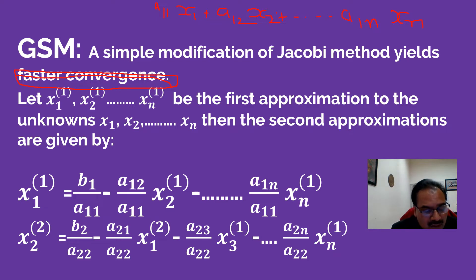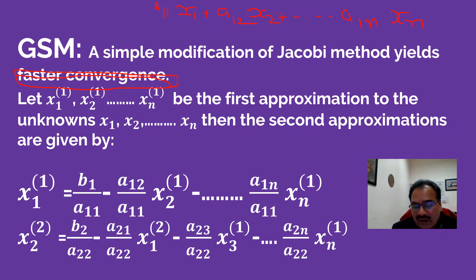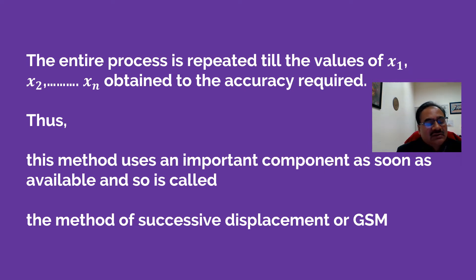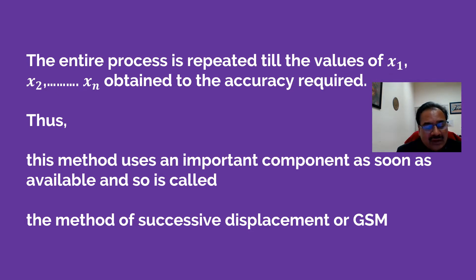Similarly, you will get x2⁽²⁾ = b2/a22 − (a21/a22)·x1⁽²⁾ − (a23/a22)·... and x3⁽²⁾ and xn⁽²⁾ also in this form. The key point is that values are updated immediately as soon as they become available. The Gauss-Seidel process is repeated until the values of x1, x2, ... xn are obtained to the required accuracy. This is why it is called the method of successive displacement.